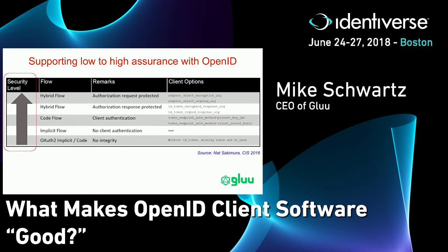OpenID Connect is really interesting because one of the design philosophies was to keep simple things simple, but also to make hard things possible. So you can do different types of implementations of OpenID Connect that achieve different security levels. This is a slide from Nat — he gave it a couple years ago at CIS. It shows you that at the bottom, if you just use OAuth, it's not insecure, but security is always about risk. As we do more, we can mitigate more types of risk, and OpenID Connect builds on top of OAuth and adds more features for higher levels of security.